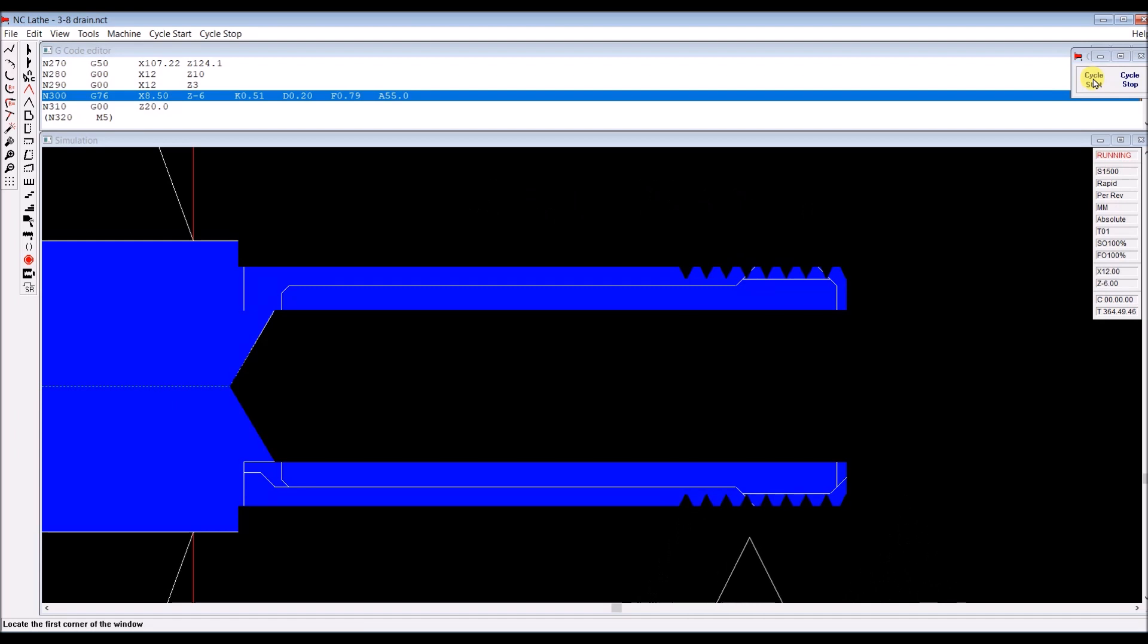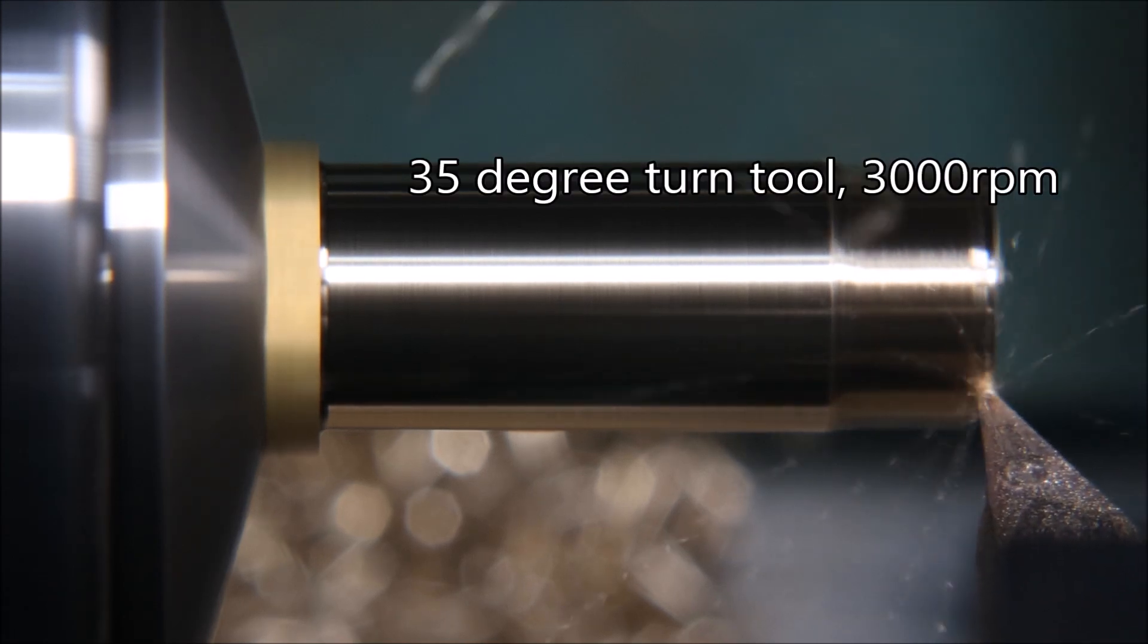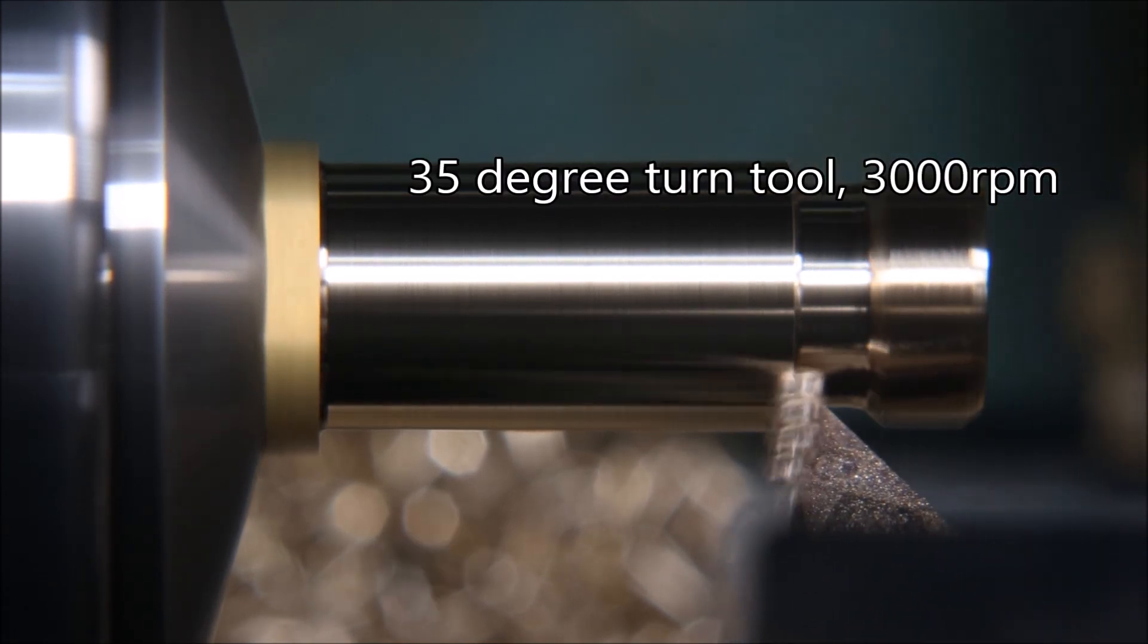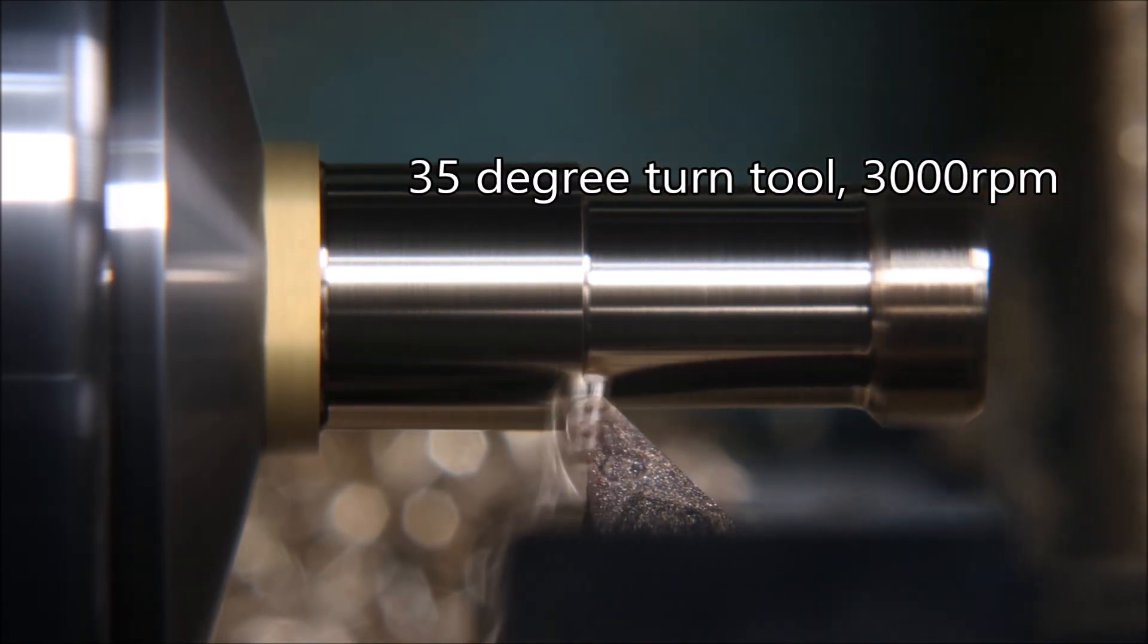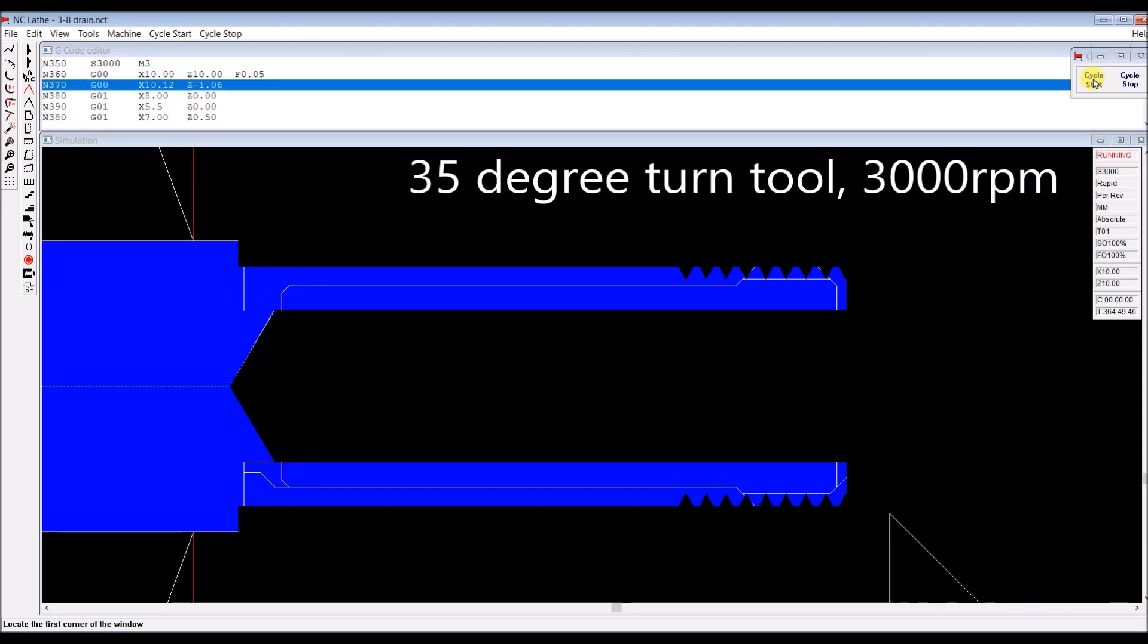Here I'm using a 35 degree insert so that I can cut a 45 degree on the back chamfer of the thread. And that chamfer there in this simulation.